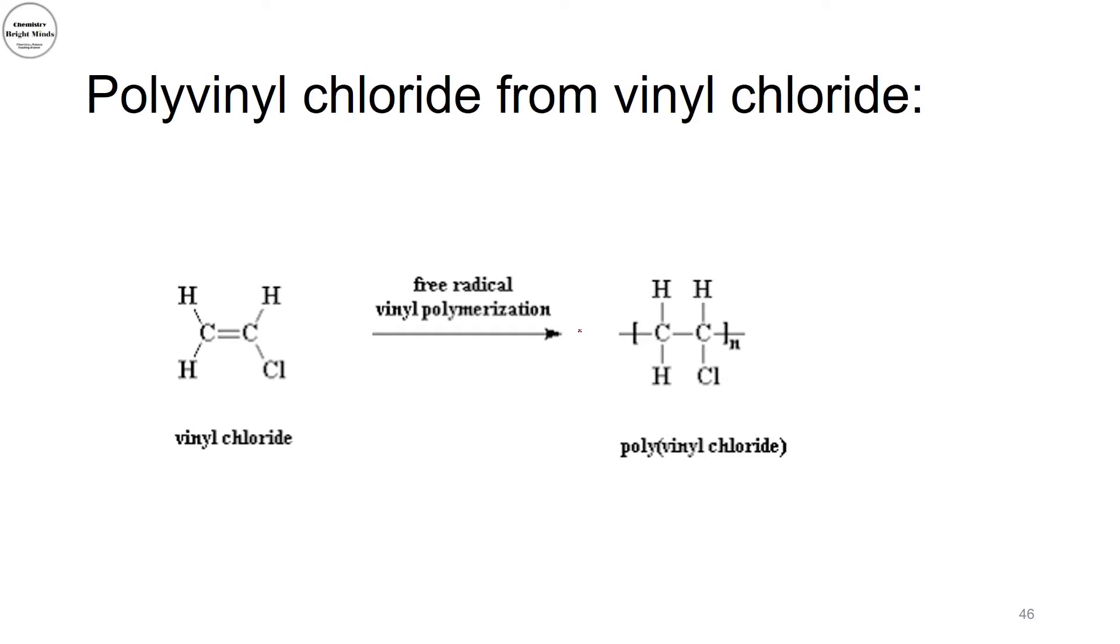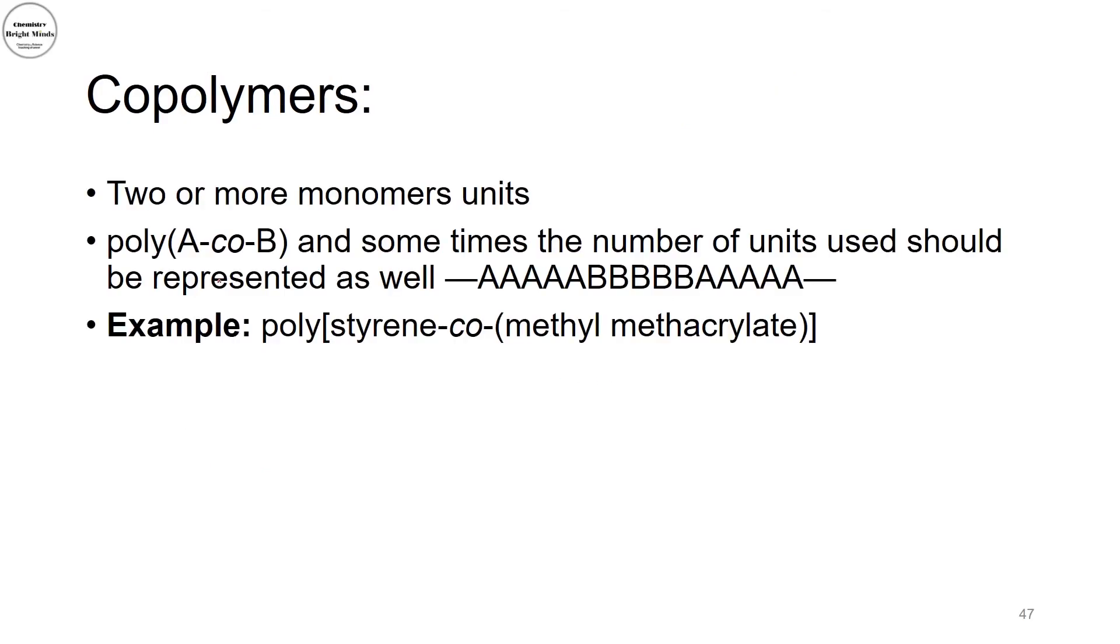Now, for polyvinyl chloride, it is formed from the vinyl chloride. And from here, you could see that the vinyl chloride, we break the bond, the double bond, and we form our polyvinyl chloride. So now for naming on the source-based polymer bases.